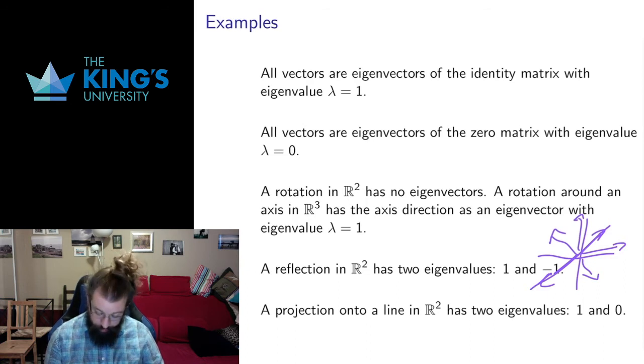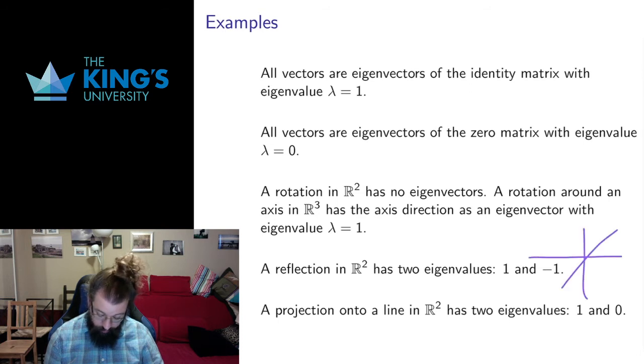Similarly, if I have a projection in R2, if I project onto a line, anything on the line still stays the same. So if I have a vector on the line, it doesn't go anywhere, so it'll have eigenvalue 1. Anything perpendicular to the line gets sent to 0. So anything on this line gets projected down to the origin.